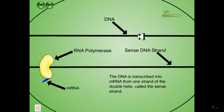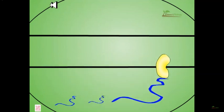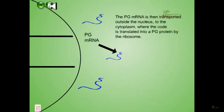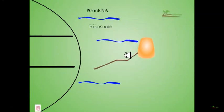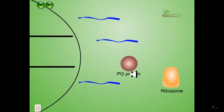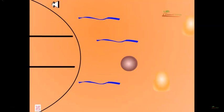The DNA is transcribed into mRNA from one strand of the double helix called the sense strand. The PG mRNA is then transported outside the nucleus to the cytoplasm where the code is translated into the PG protein by the ribosome. As the ripening process continues, more and more copies of PG mRNAs are made in the cell nucleus, resulting in more PG in the plant, which leads to more ripening of the food.